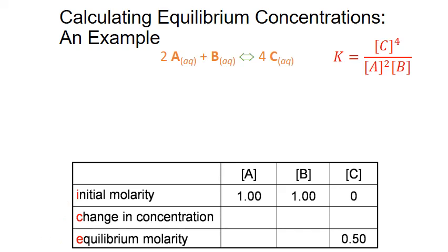We're going to fill in the blanks in this table, starting with the change in concentration. This represents how much the concentration changed and the direction of change between our starting point and equilibrium. We represent both direction and amount of change, using pluses or minuses to show whether the concentration increased or decreased. We can clearly see from product C that we started at zero and ended at 0.50, so it had to increase — that's a plus for the direction of change.